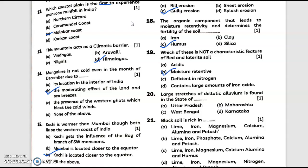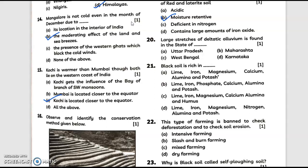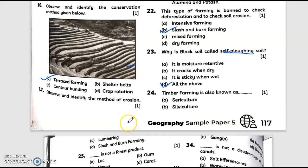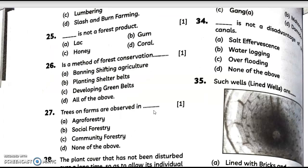Which of these is not a characteristic feature of red and laterite soil? Moisture retentive. Large stretches of deltaic alluvium is found in the state of West Bengal. Black soil is rich in... answer is option A. This type of farming to check deforestation and to check soil erosion - answer is B. Why is black soil called self-ploughing soil? Answer is option T. Timber farming is also known as... options are given: lumbering, slash and burn farming, seddy culture, silviculture. Answer is option B.